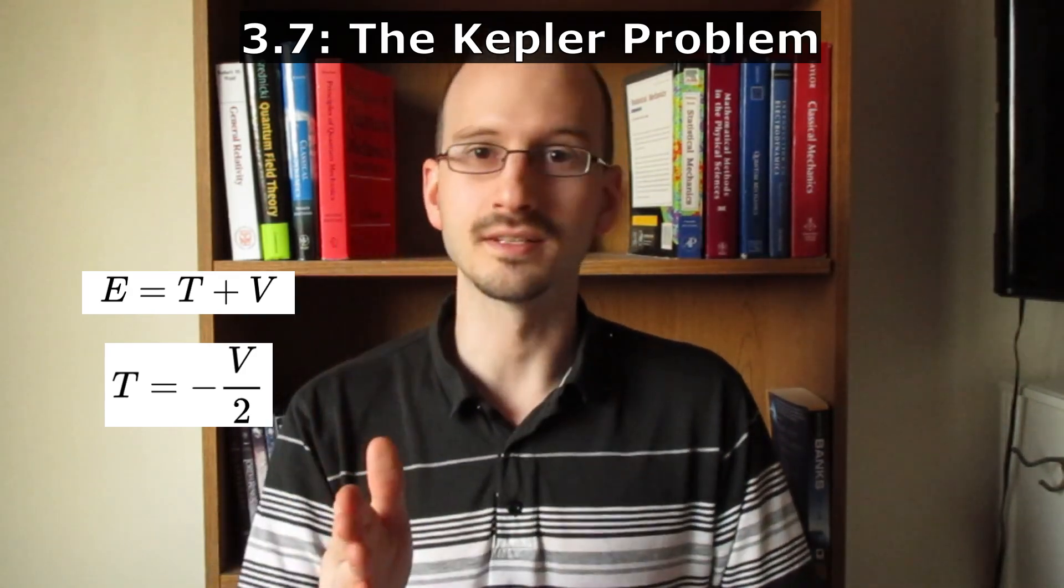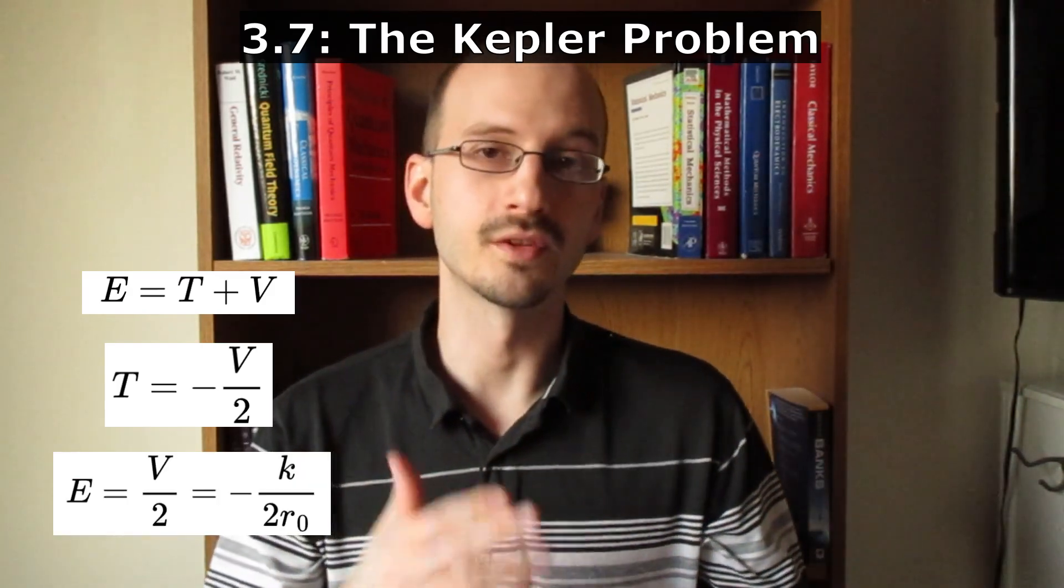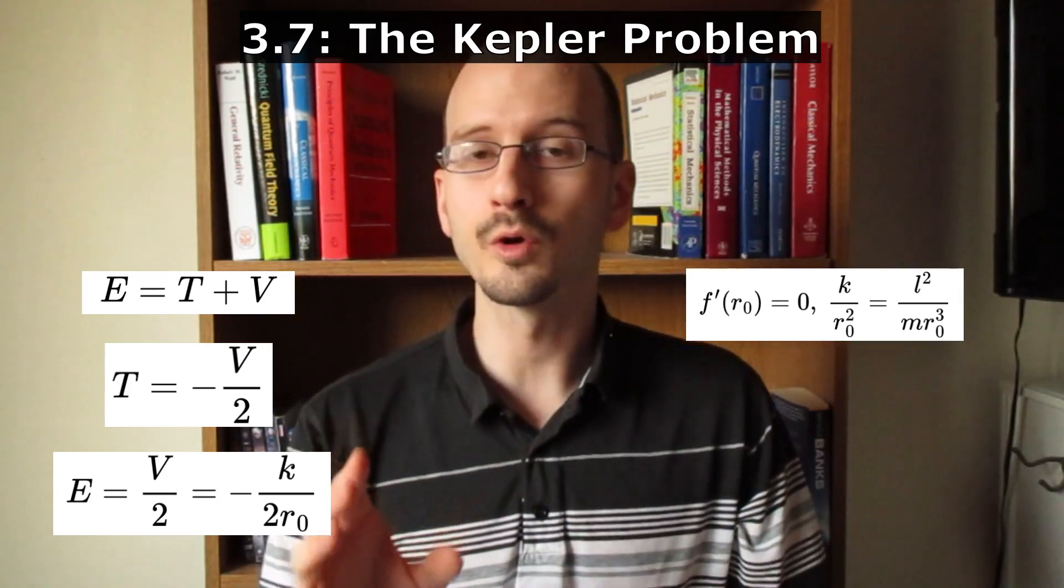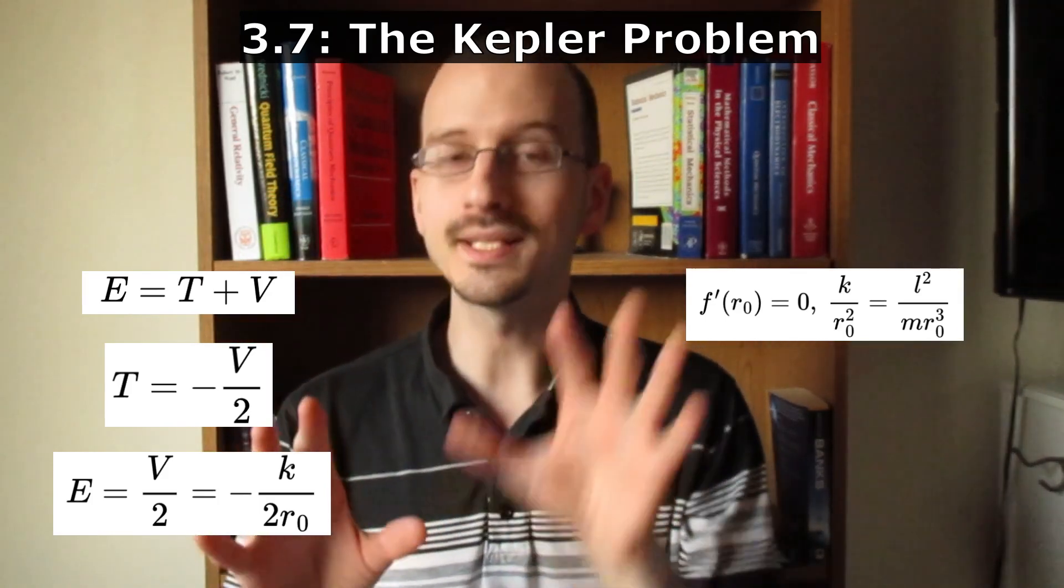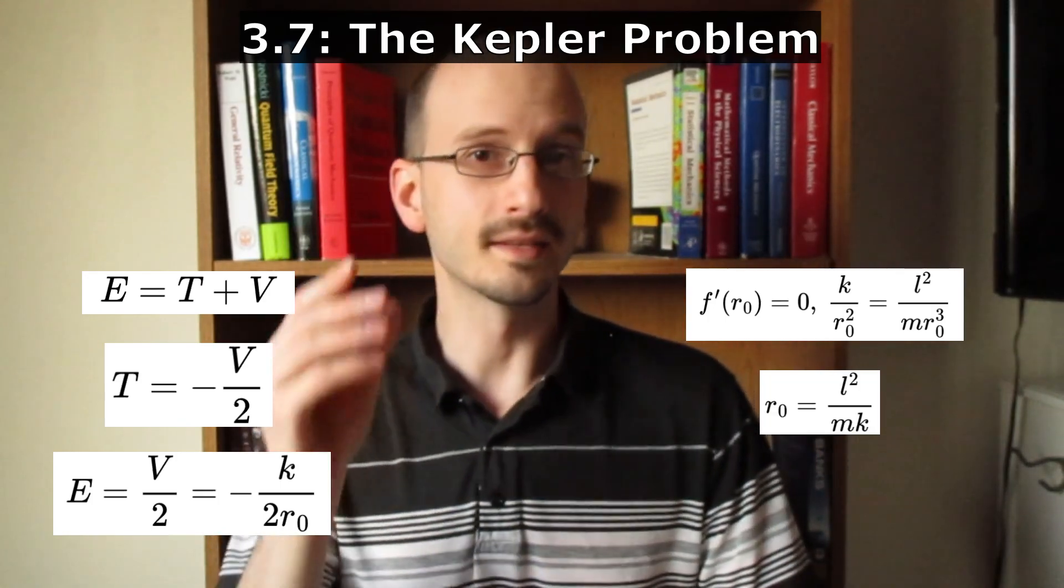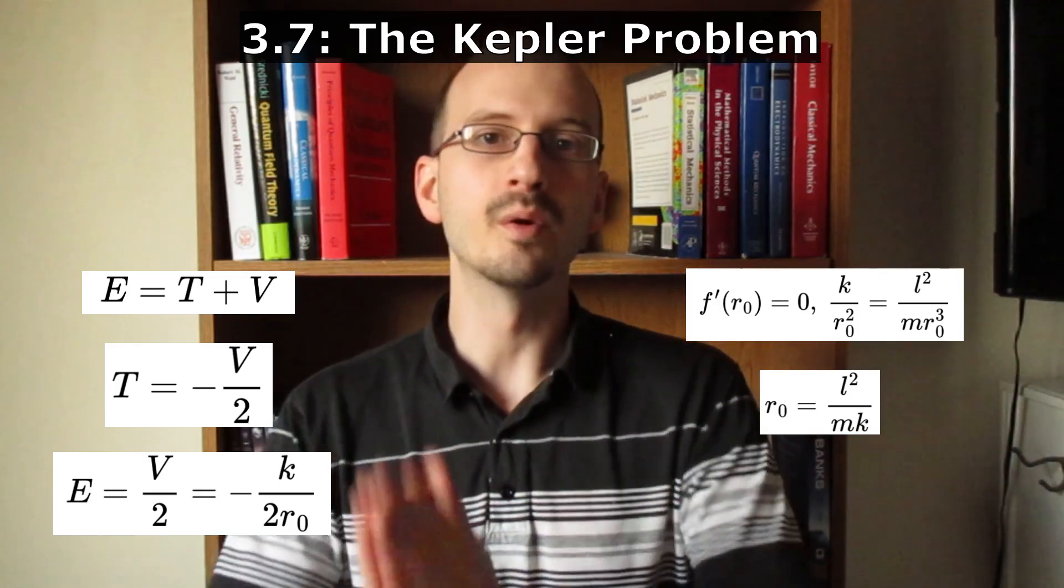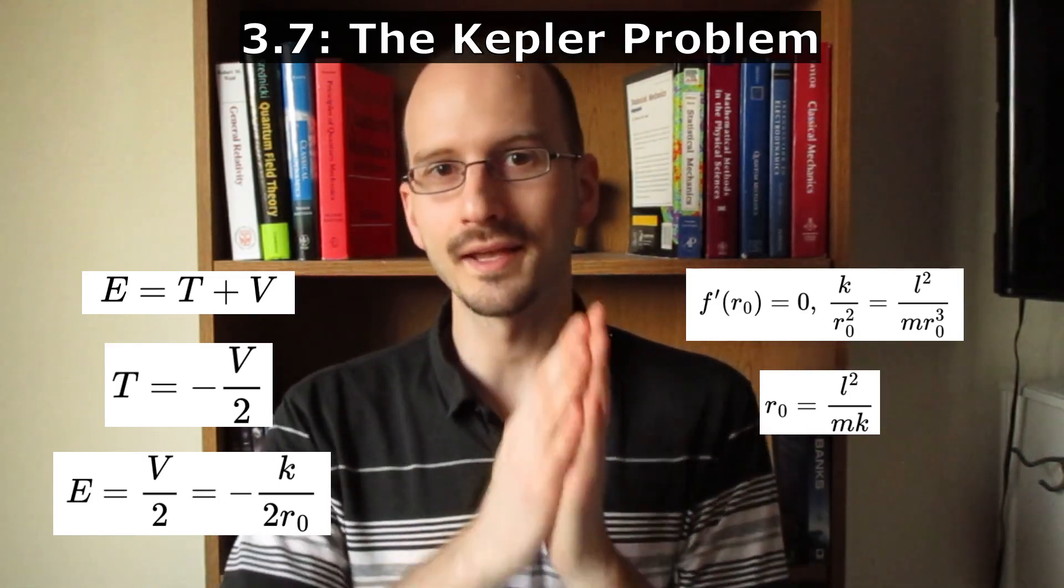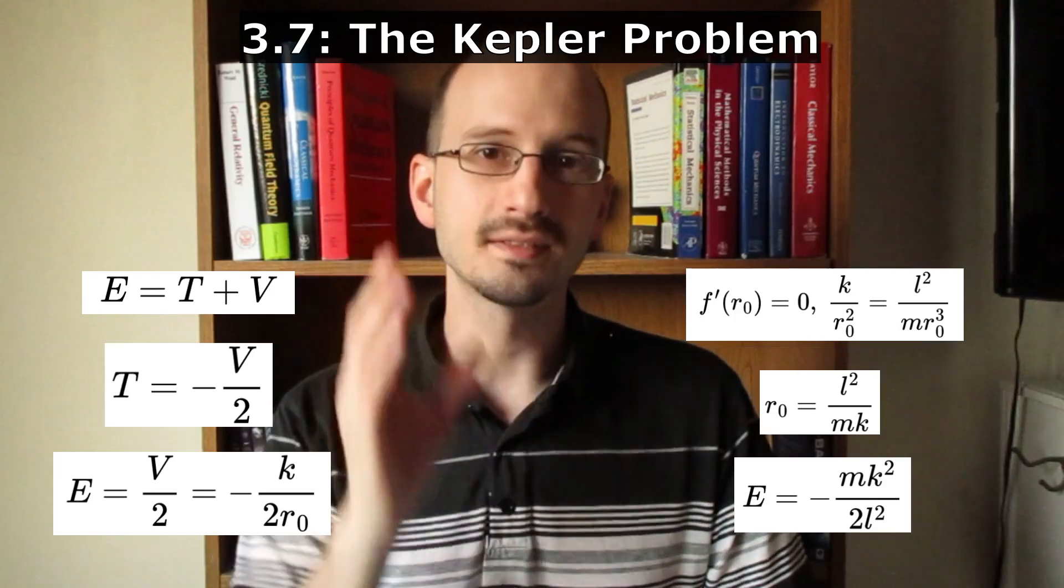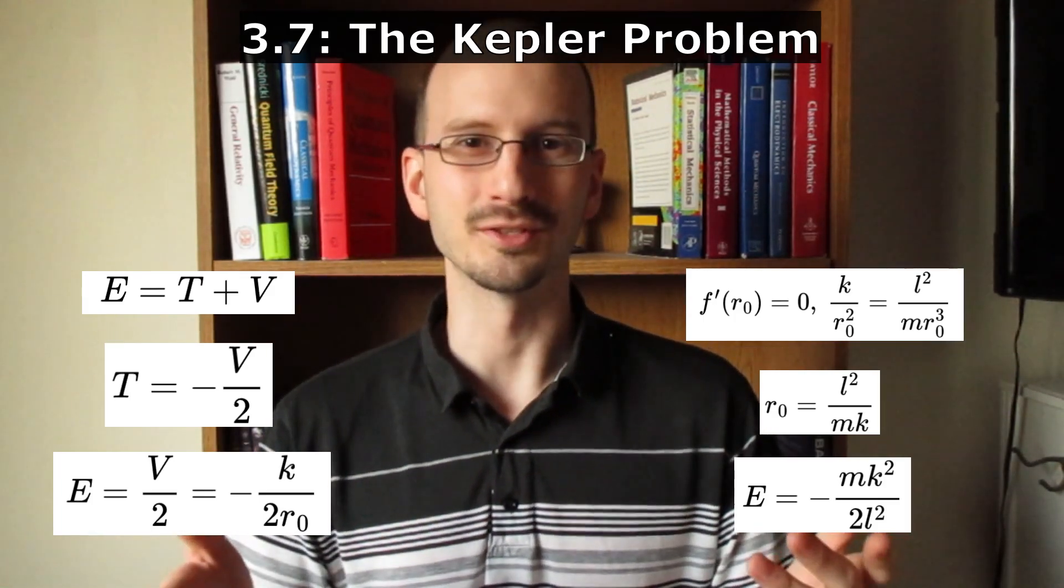Because if something is constant, it is equal to its average. This means the energy is a function of the distance of the orbit. Because for a circular orbit, the force has to be equal and opposite the centrifugal force, we can find the distance of the orbit in terms of the angular momentum. And when we write the energy in terms of the angular momentum, we find the same relation we got from the eccentricity. Isn't math just so cool?